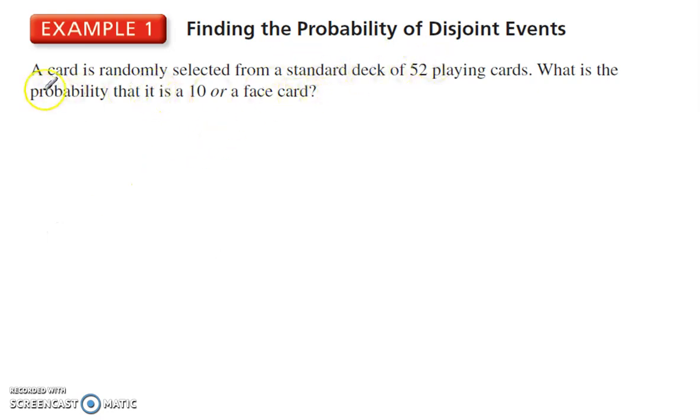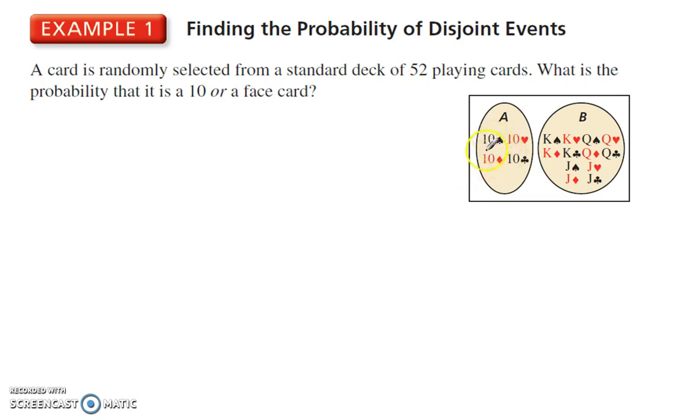Alright, so we want to find the probability of a disjoint event. A card is randomly selected from a standard deck. What is the probability that it is a 10 or a face card? Okay, it helps to make a little Venn diagram, so you can picture this. If it's a 10, it's not a face card. Okay, there are four suits, so there are four different 10s.